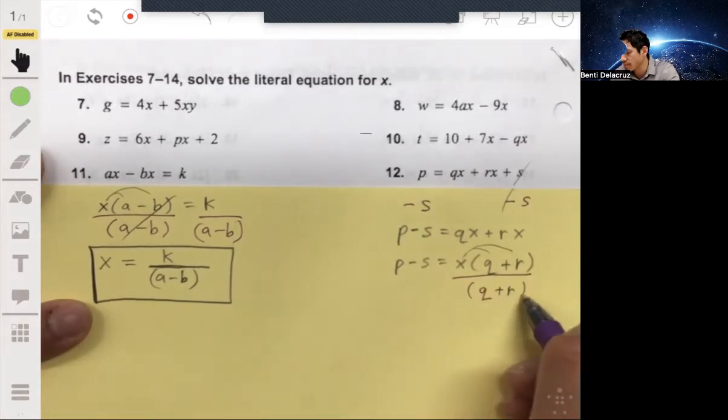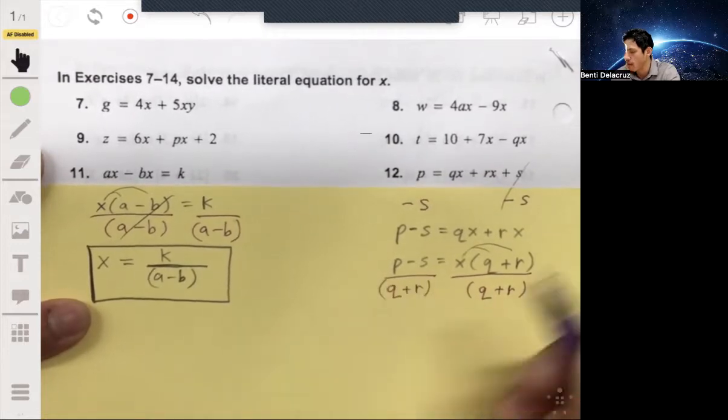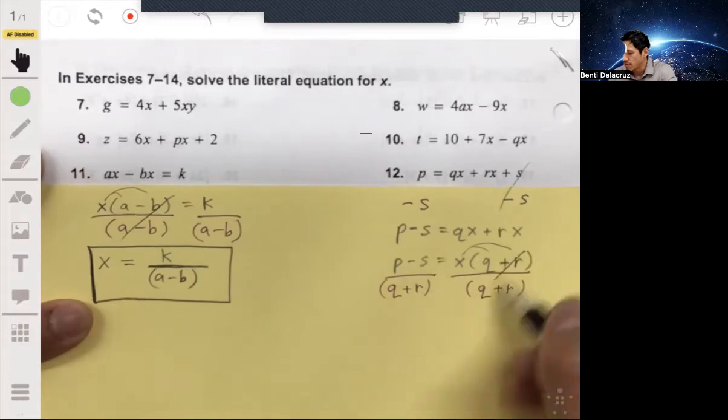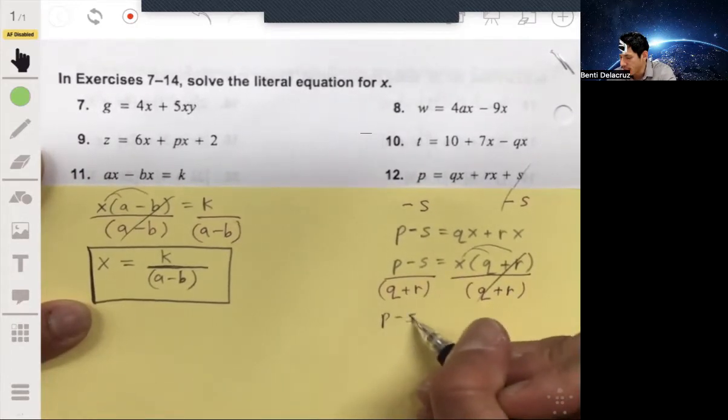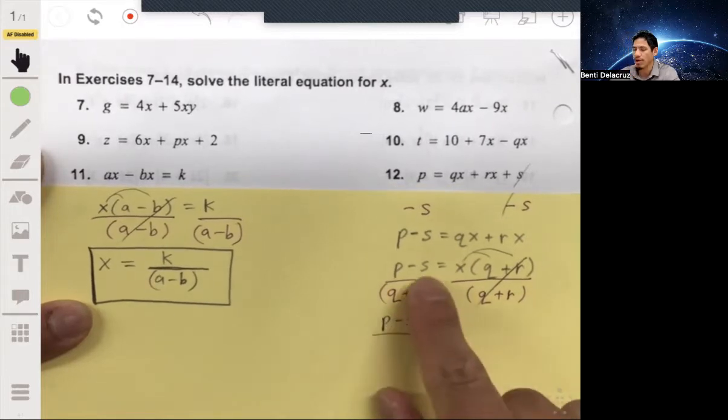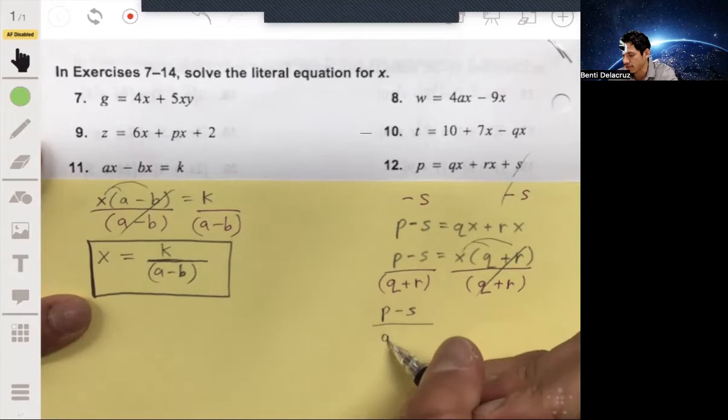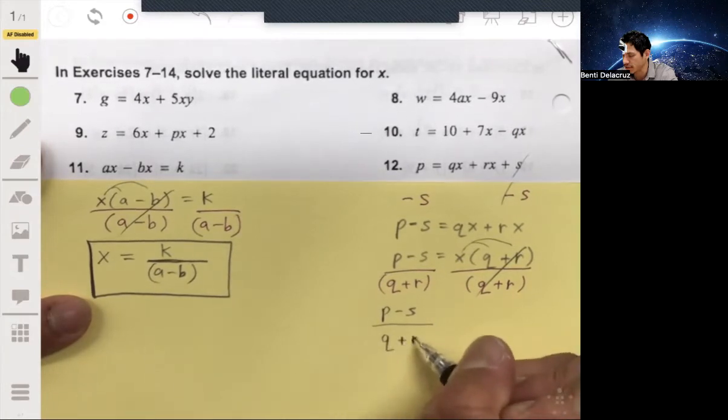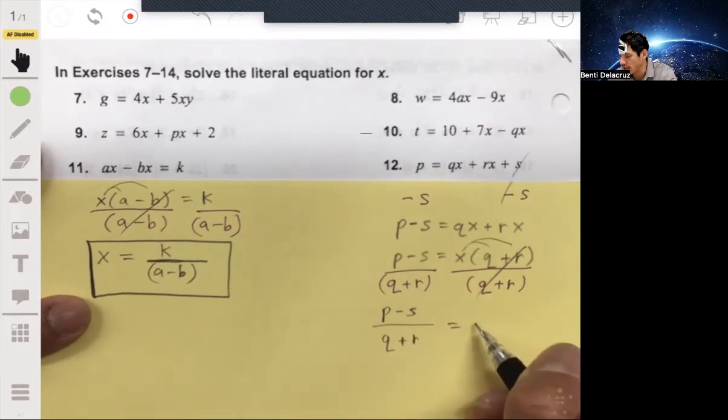In this case, it's just dividing by Q plus R. So this goes away. And, again, try not to mess around with breaking this up into fractions if you're not confident. And so it's perfectly fine if you just leave your answer like this. Your answer will just be P minus S over Q plus R is equal to X.